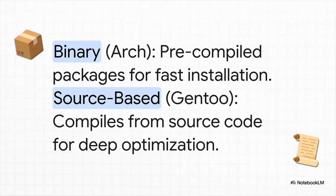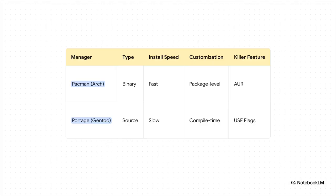This difference in philosophy directly leads to their core technology. Arch is a binary distribution — its package manager, Pacman, just grabs pre-compiled software and installs it. It's super fast and really efficient, like snapping together perfectly engineered Lego blocks. But Gentoo is a source-based distribution. Its package manager, Portage, actually downloads the human-readable source code for a program and then builds it from scratch right there on your machine. That's the act of alchemy — turning raw code into a working program that's been tailored specifically for your hardware. And this table just crystallizes the whole trade-off.